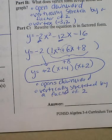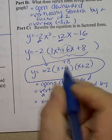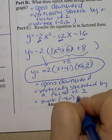If you would say vertically stretched by a factor of negative 2, that would be incorrect. And the last one is it shows the x-intercepts. The x-intercepts occur at negative 4, 0 and at negative 2, 0.